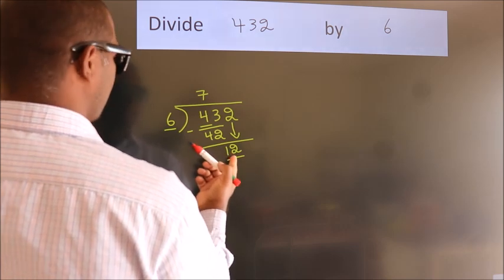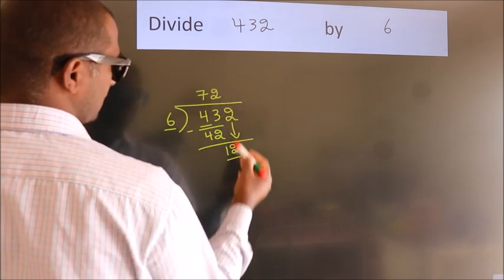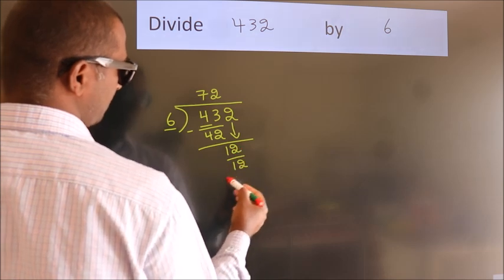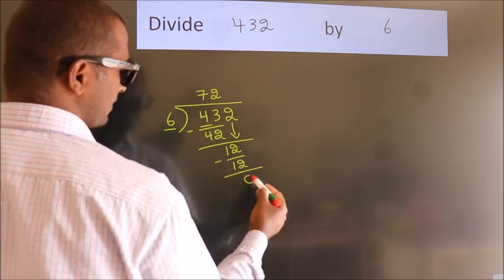When do we get 12? In the 6 table, 6 times 2 is 12. Now we subtract. We get 0.